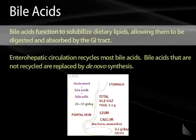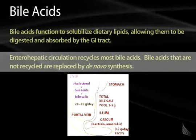The function of bile acids is to solubilize dietary lipids by causing them to be emulsified so they can be absorbed into the GI tract. The bile acids, once absorbed, go through what we call enterohepatic circulation — they circulate back to the liver via the portal vein and are recycled, then excreted back into the ileum. The bile acid pool is recycled almost all the time.